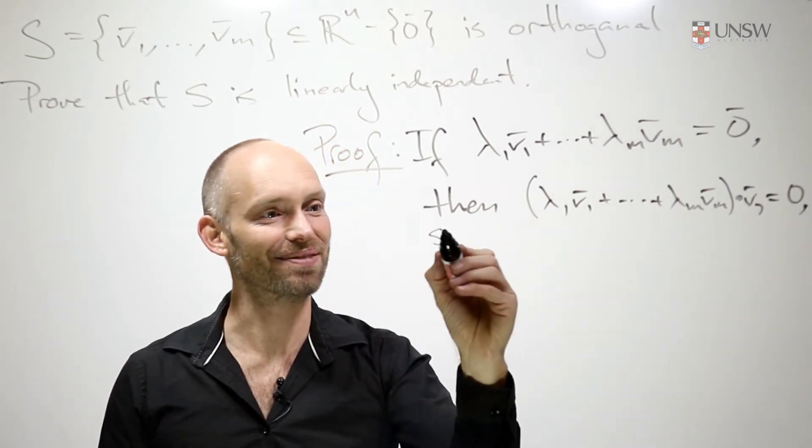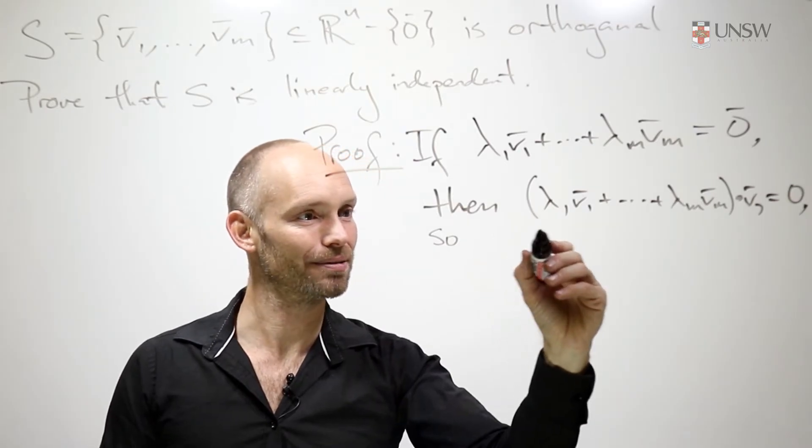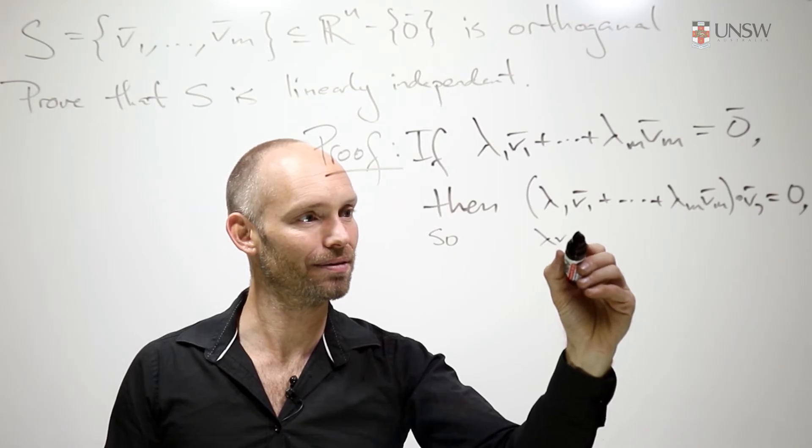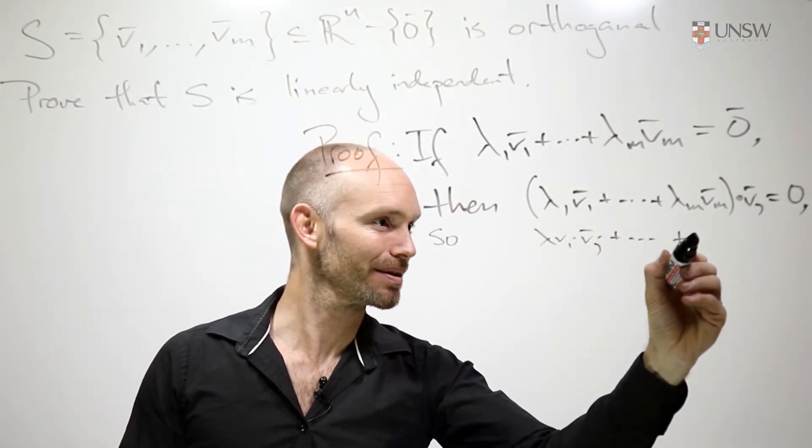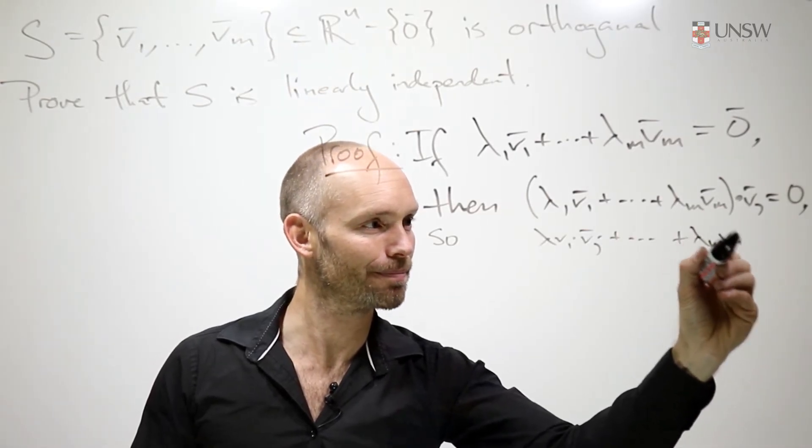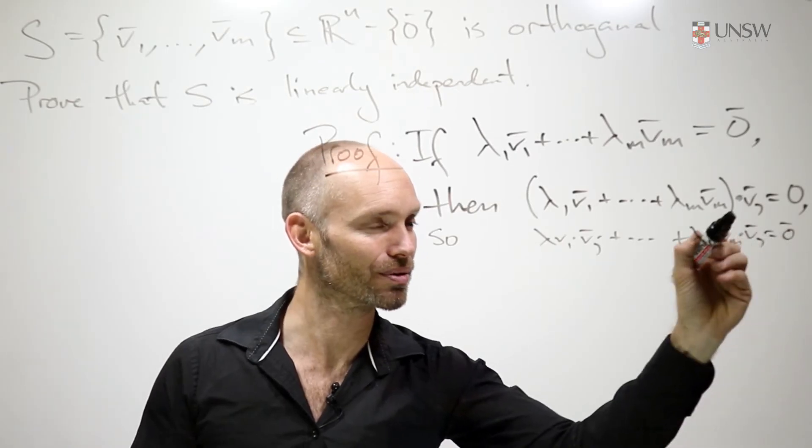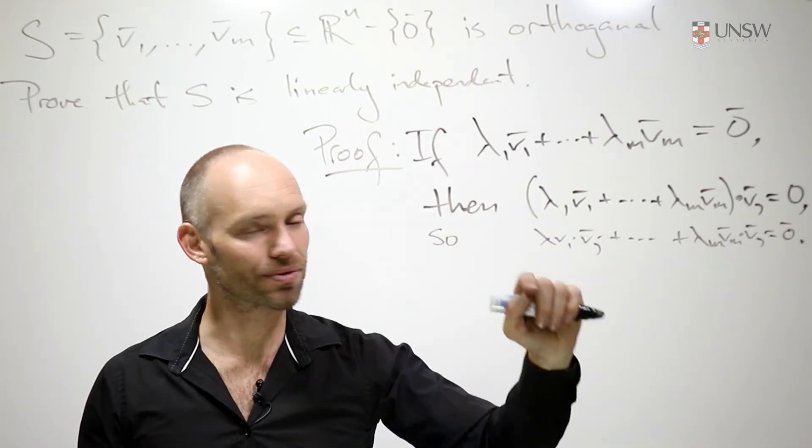So we have λ1 v1 dot v_j, and a whole lot of terms, right up until we have λm vm dot v_j. And all of this is still equal to zero. But let's look at each of these individual terms.